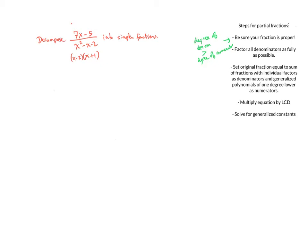Now I'm going to set the original fraction — using the factored form — equal to a sum of fractions with individual factors as denominators. The factors were x minus 2 and x plus 1, so I'll have one fraction with x minus 2 and one with x plus 1. If I had had three factors in the bottom, I would have had three different fractions.